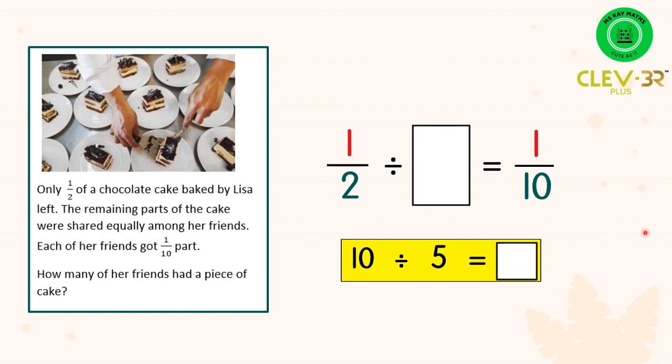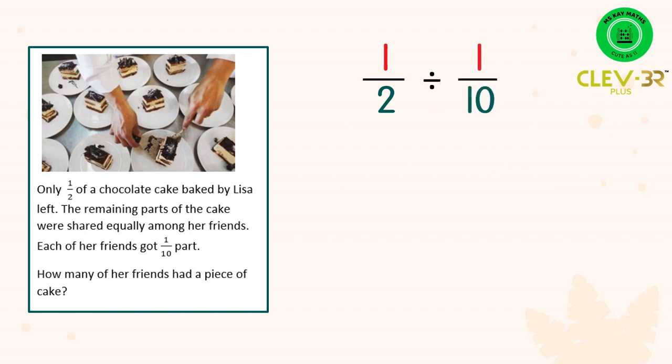So using the same concept to find the unknown we can use the equation 1/2 divided by 1/10. So in this division we can change the symbol into the symbol of multiplication and by doing that we need to change 1/10 to 10/1. Pengangka menjadi penyebut, penyebut menjadi pengangka.